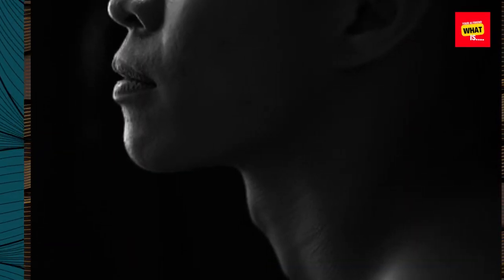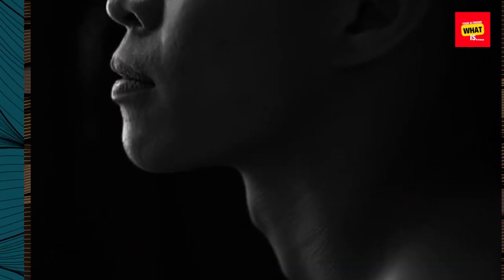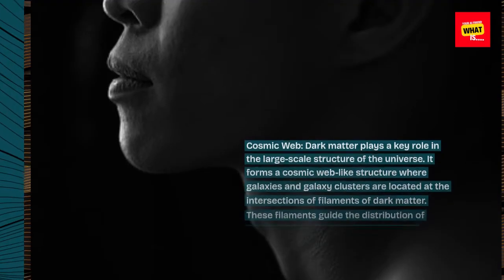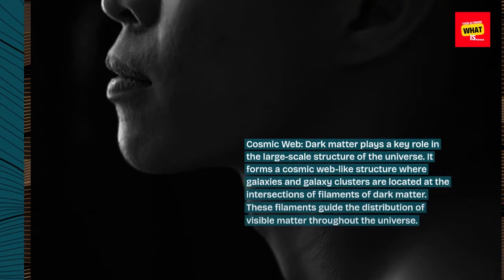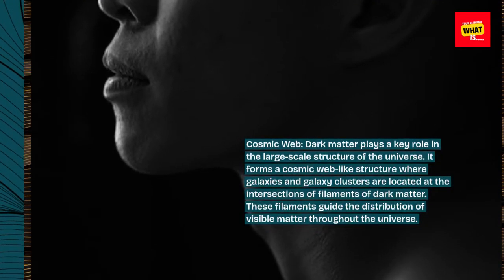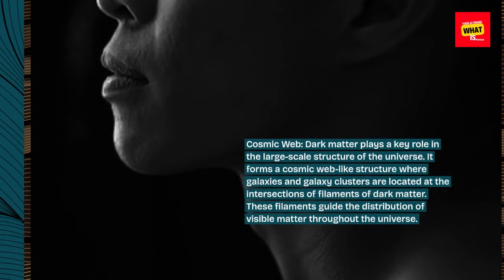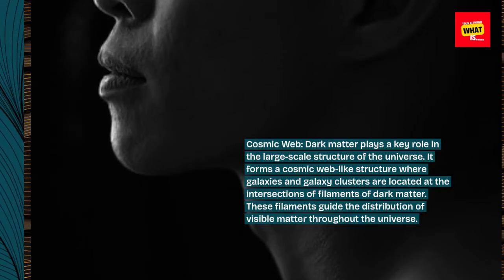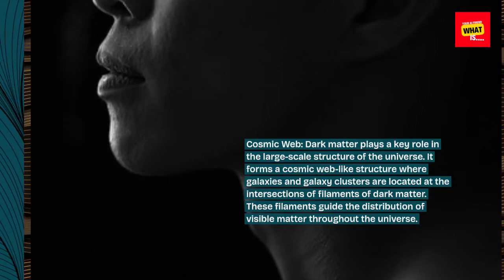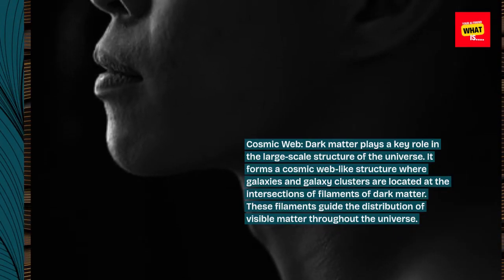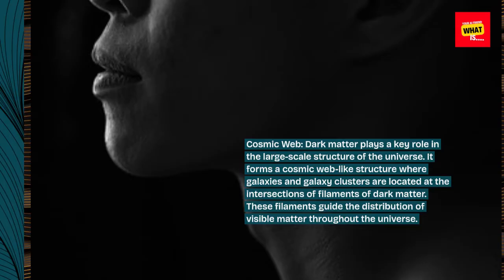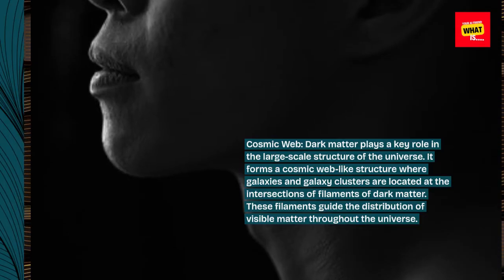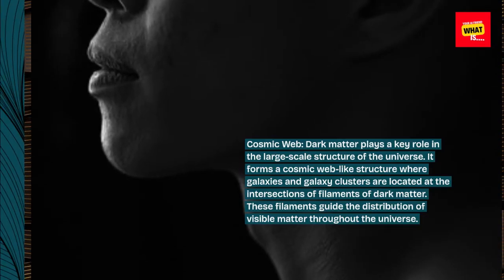Dark matter plays a key role in the large-scale structure of the universe. It forms a cosmic web-like structure where galaxies and galaxy clusters are located at the intersections of filaments of dark matter. These filaments guide the distribution of visible matter throughout the universe.